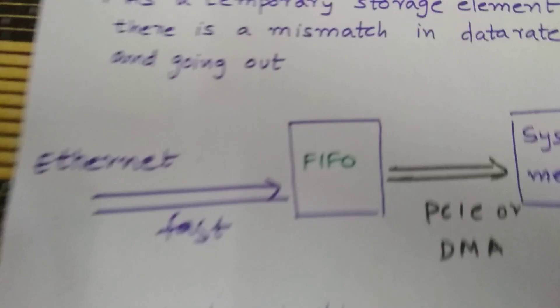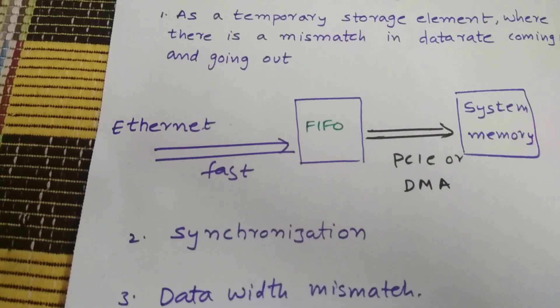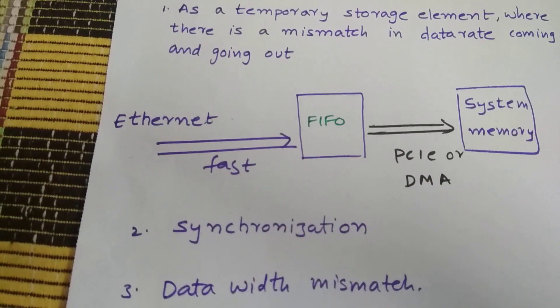32 to 16, who's going to convert? FIFO is going to convert. So FIFO is mainly used in clock domain crossing, data rate mismatch, synchronization and data width mismatch.